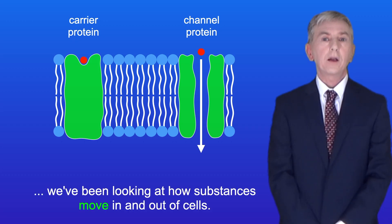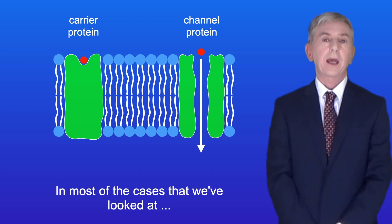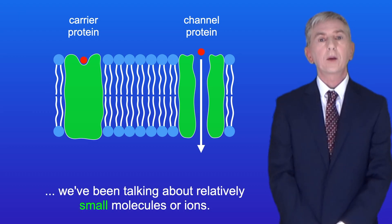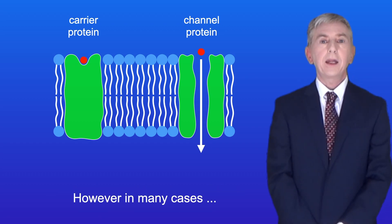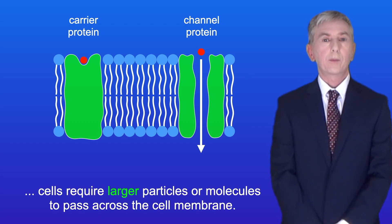In the last few videos, we've been looking at how substances move in and out of cells. In most of the cases that we've looked at, we've been talking about relatively small molecules or ions. However, in many cases, cells require larger particles or molecules to pass across the cell membrane.